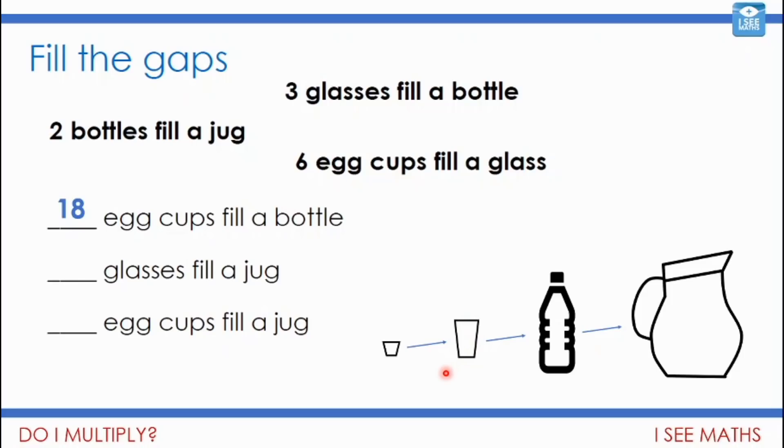Now, how many glasses to fill a jug? So I've got to go on this kind of leap here. So I've got to think, well, two of the bottles fill the jug, and that is, and three glasses fill a bottle. So it's almost, here, it is two lots of the three, which is six. So how many egg cups fill a jug? Well, this is six egg cups, and then three glasses in here. So this is almost like 18 egg cups to fill the bottle. And then another two lots of that to fill the jug. So how many egg cups in total? 36.